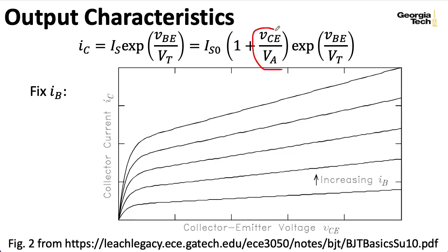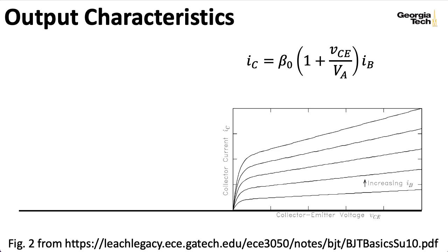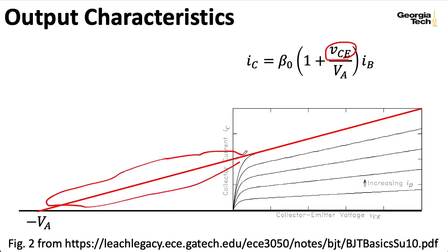To get a sense of what this VCE over VA term is doing, it's convenient to expand the horizontal axis down to negative voltages. And we could imagine plotting minus VA, and if you were to plug minus VA in here for VCE, then you would get zero. Now, the thing I want to emphasize is that this part of this line I drew here isn't real. There's no physics going on here that gives you that kind of behavior. This is just a convenient way of visualizing the kind of line that you'll see up here in the upper right part of the graph.